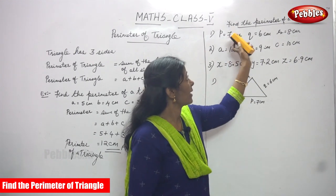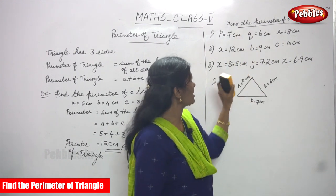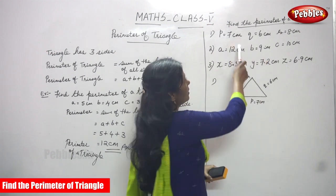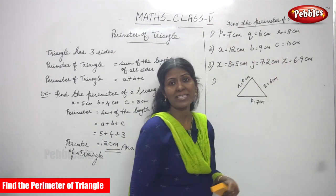Now we are going to solve find the perimeter of a triangle. The first question is P is equal to 7 centimeters, Q is equal to 6 centimeters, R is equal to 8 centimeters.